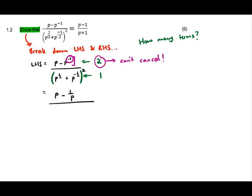Looking at the denominator, you'll see it has a square outside a bracket. Whenever you see an exponent outside a bracket, look inside — in this case we have a plus, meaning more than one term. If you have more than one term inside a bracket, you have to FOIL. As I say to my class: you FOIL or you fail. So write it out the long way: p to the half plus p to the negative half, multiplied by p to the half plus p to the negative half.